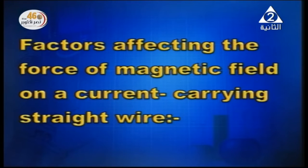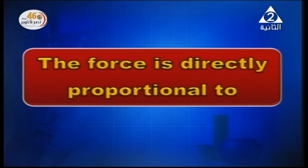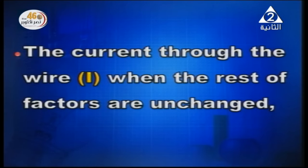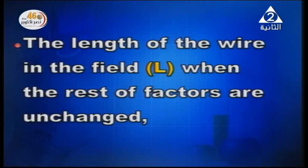Now talking about the factors that affect the force — the magnetic force acting on a current-carrying straight wire. First of all, the force is directly proportional to the current intensity, the current passing through the wire. The force is directly proportional to the current intensity when the rest of the factors are kept unchanged. Also, it is directly proportional to the length of the wire: the longer the part of the wire in the field, the greater the magnetic force.